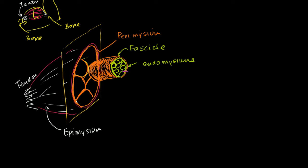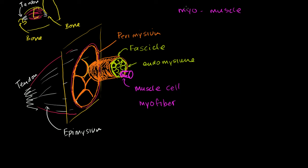So this thing right here — I can pull it out a little bit — this is an actual muscle cell, or a myofiber. Two prefixes you'll see a lot when dealing with muscles: 'myo,' which refers to muscle, and 'sarco,' like sarcolemma or sarcoplasmic reticulum, which means flesh. So sarco is flesh, myo is muscle. This is a myofiber — an actual muscle cell.